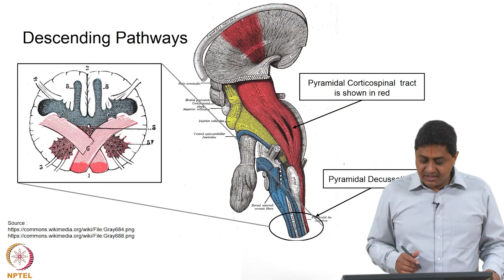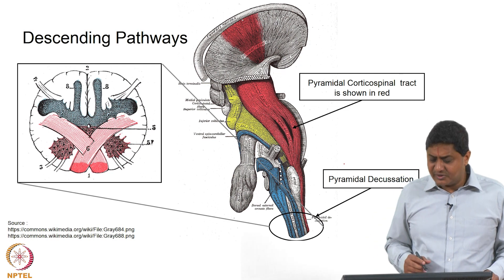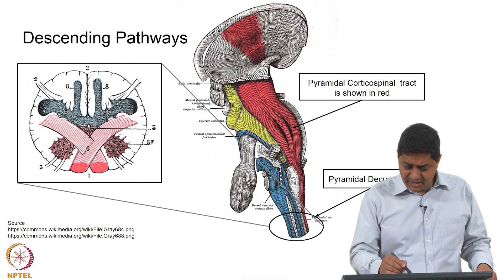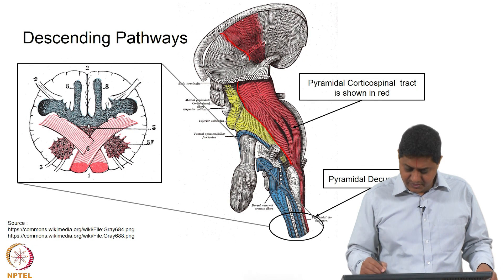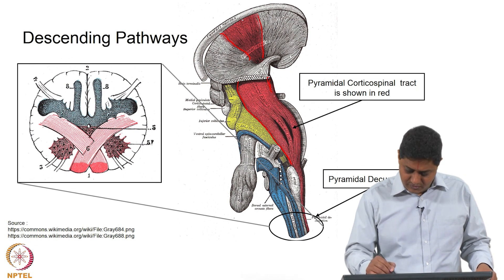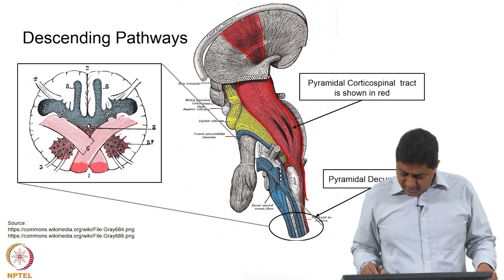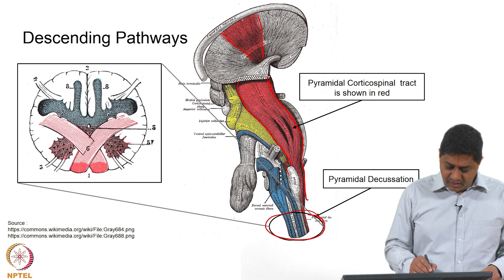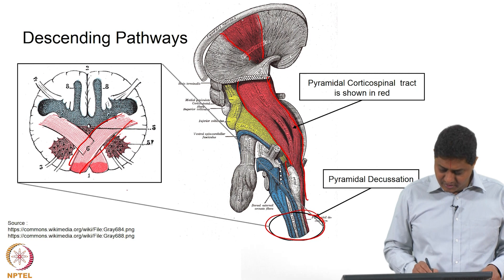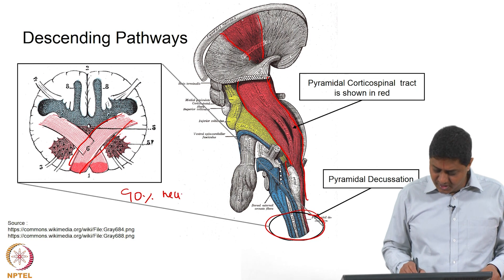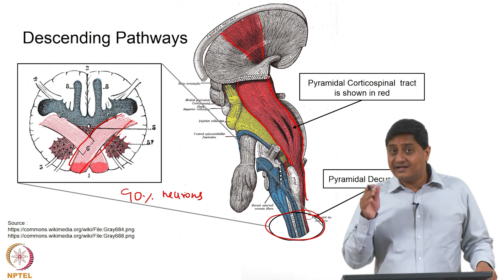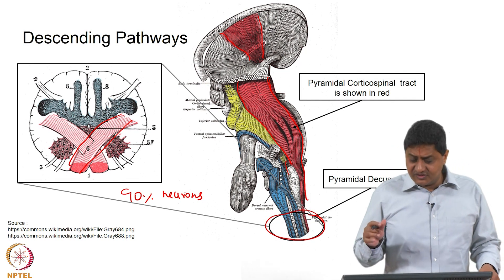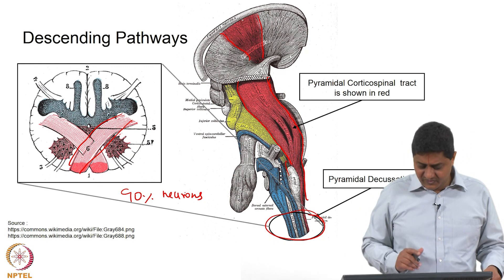What we also saw was the pyramidal tract — there are several descending pathways including the corticospinal pathway and the corticobulbar pathway. The pyramidal tract is shown in red here, going through the internal capsule. This is where the decussation happens — the crossing over of about 90 percent of the neurons to the contralateral side, which means there are 10 percent of the neurons that project either ipsilaterally or bilaterally. About 80 to 90 percent of these neurons cross over to the other side in that area.